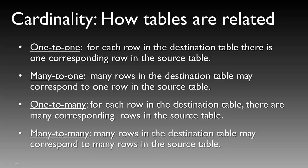When discussing cardinality, there are four basic types. One to one: for each row in a destination table, there is one corresponding row in the source table. Many to one: many rows in a destination table may correspond to one row in a source table.